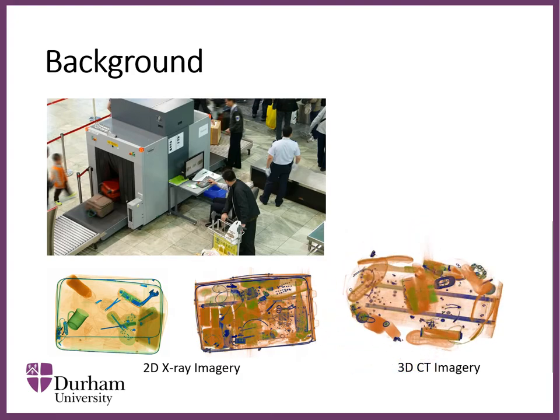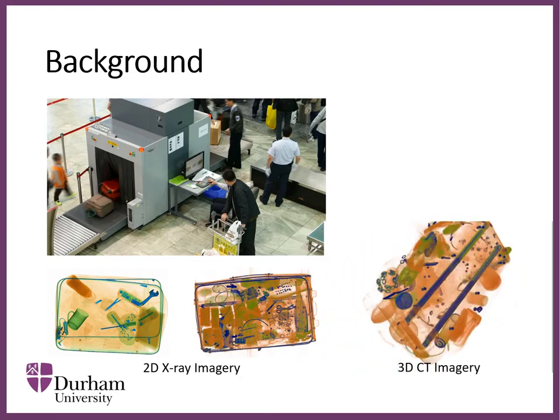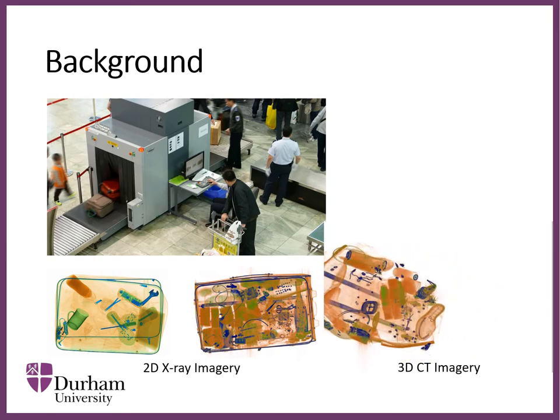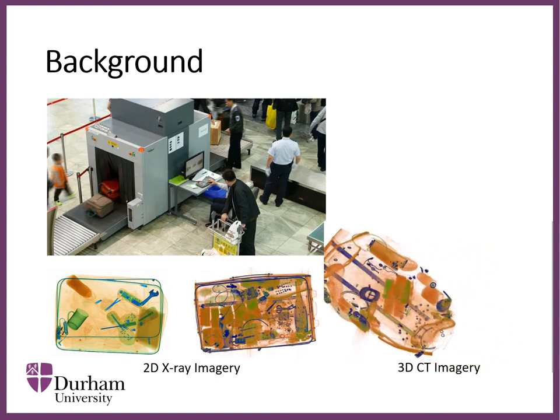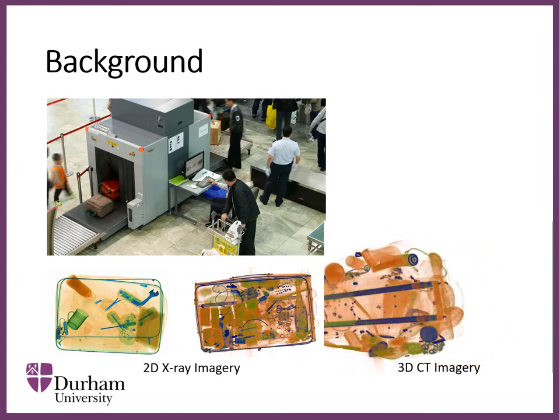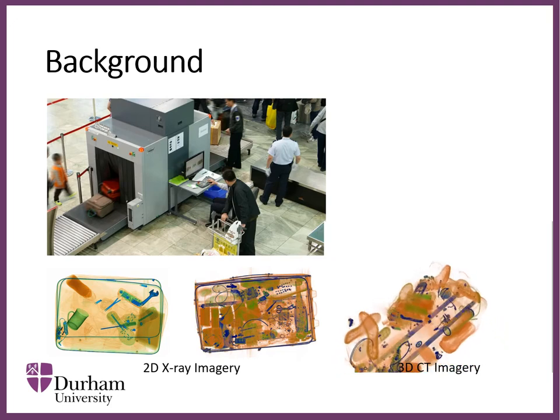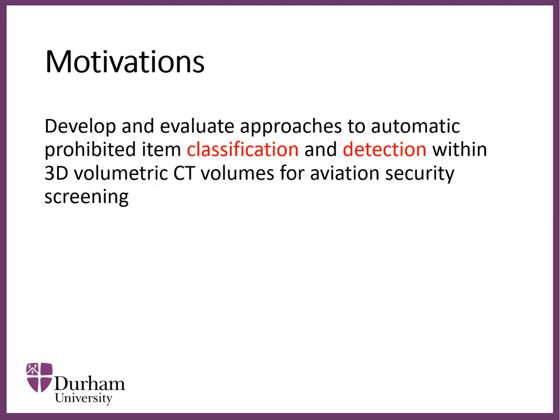With 3D CT images, one can rotate and check the image from different perspectives, which inevitably takes more time. Our work aims to alleviate these issues by developing and evaluating approaches to automatic prohibited item classification and detection within 3D volumetric CT volumes for aviation security screening.